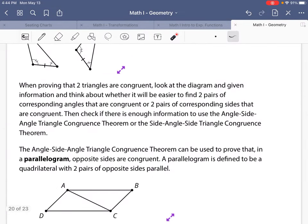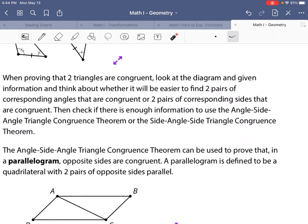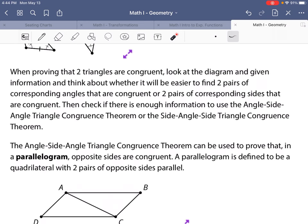What you have to do is look at the diagram and the given information, think about whether it'd be easier to find two pairs of corresponding angles that are congruent, or two pairs of corresponding sides that are congruent, and then check to see if there's enough information to use the angle-side-angle triangle congruence theorem.